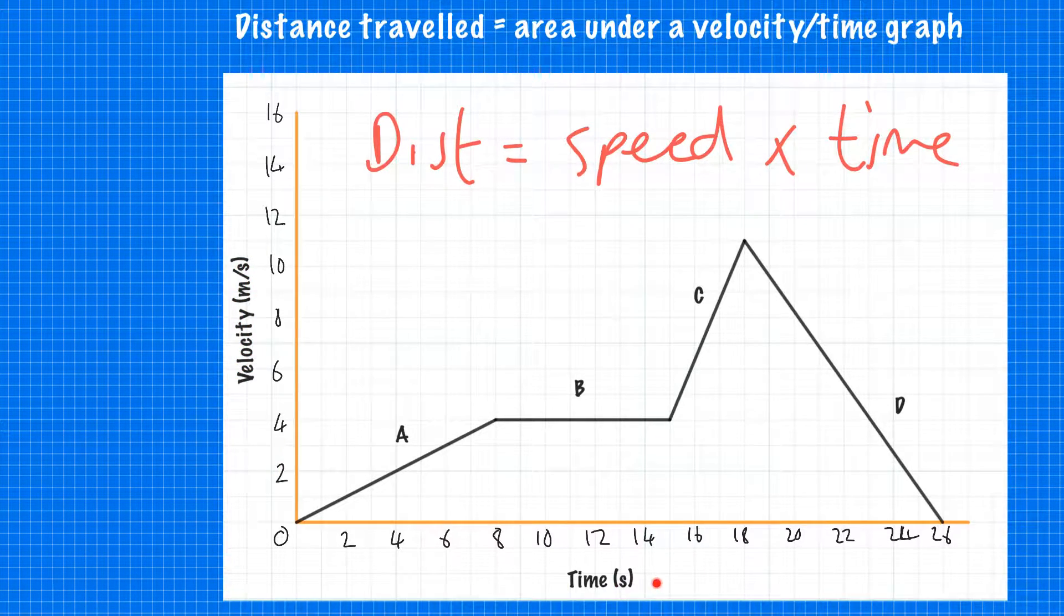If we're working out the area under this graph, you multiply the velocity (the y-axis) by the x-axis. So you end up with velocity times time, and that's distance. We're going to look at those examples now.